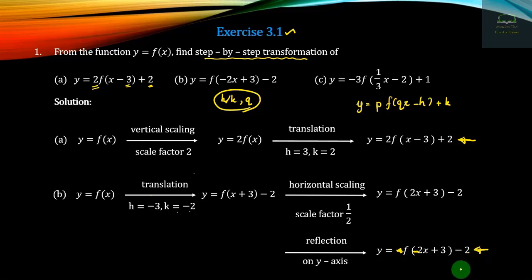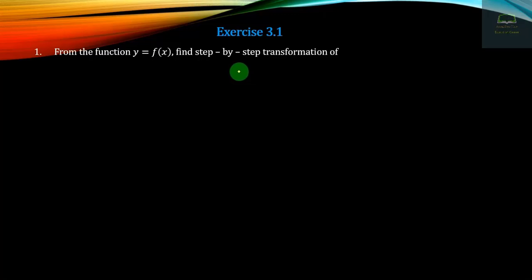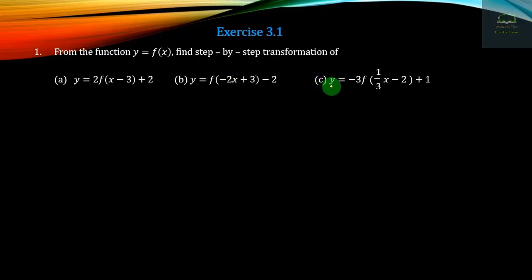Y is equal to alpha minus 2a plus 3 minus 2, is equal to alpha. Then the first one is equal to 1. Let's see how 3-2 is equal to alpha. Now the first one is alpha minus 3. Y is equal to minus 3, alpha minus 3 is minus 2 plus.